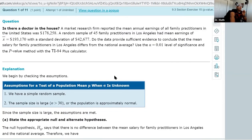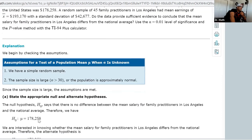So let's go ahead and run this t-test. What we're going to need to do first is identify our null hypothesis. Our null hypothesis H₀ is going to say there is no difference in the mean earnings between the United States in general versus those in LA. So our null hypothesis is μ = $178,258.